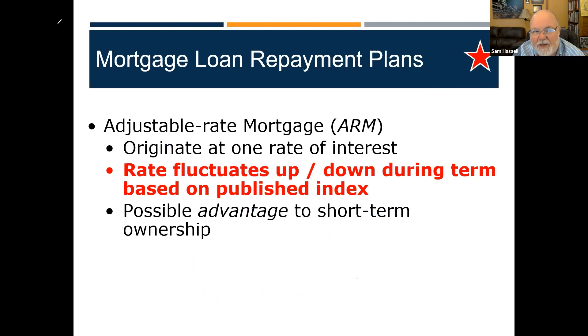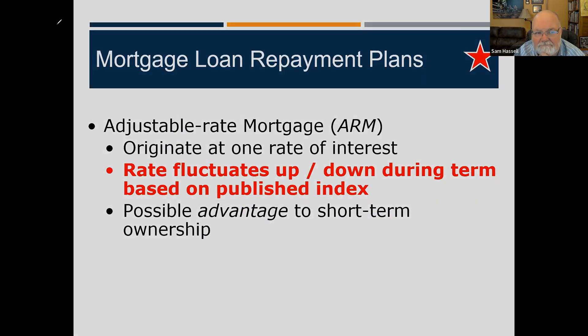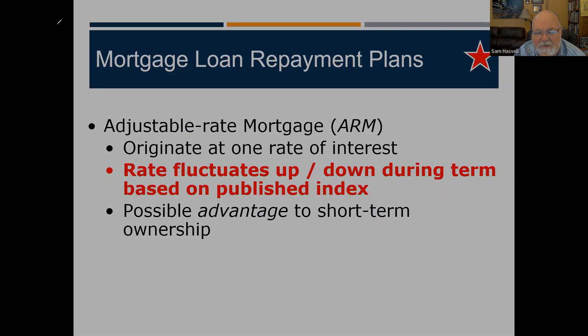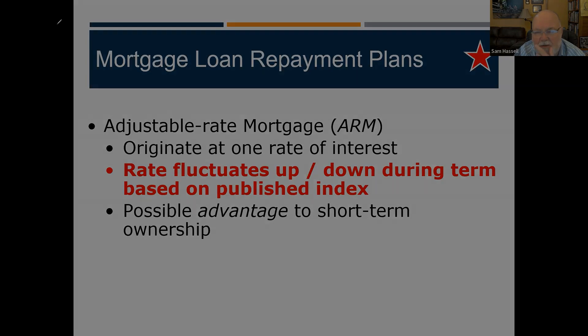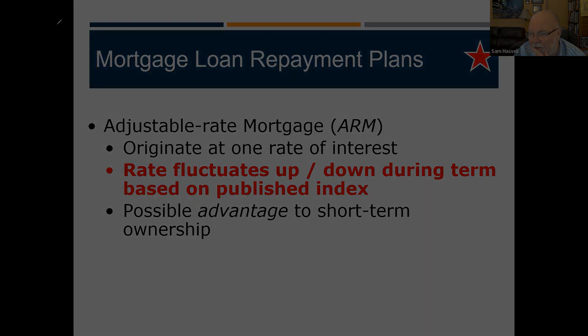That's what an adjustable rate mortgage will do for you — it's good for some people, not good for others. That rate fluctuates up and down. Short-term ownership, it will work very well.